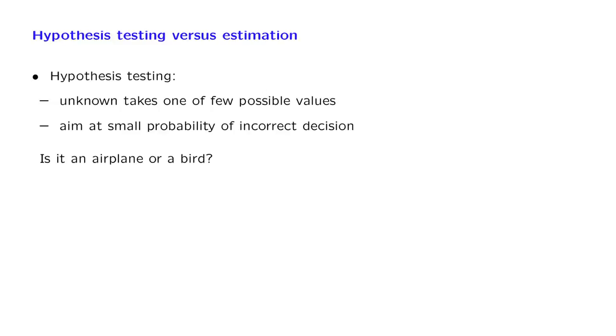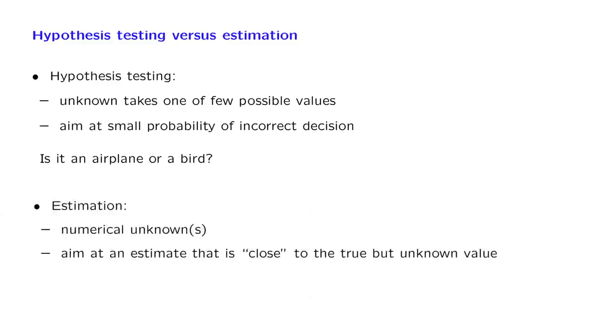So in hypothesis testing problems, we're essentially making a choice out of a small number of discrete possible choices. Instead, in estimation problems, the unknown quantities are more of a numerical type. They could even take continuous values, and what we want to do is come up with an estimate of an unknown quantity that is close to the true but unknown value of the quantity we're trying to estimate.